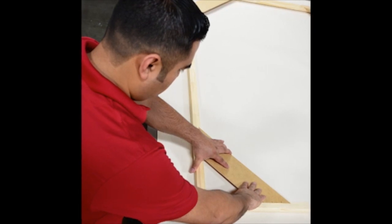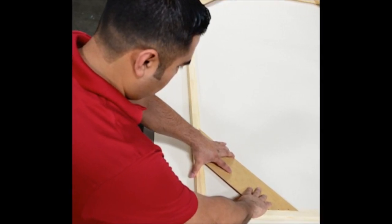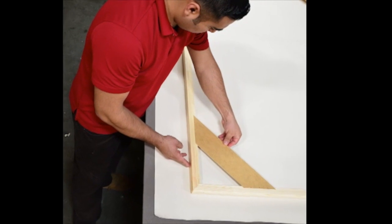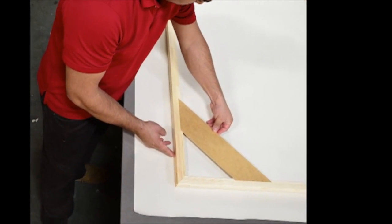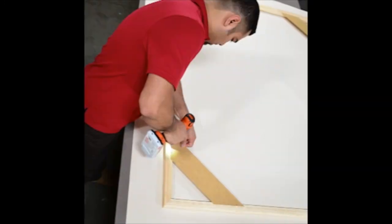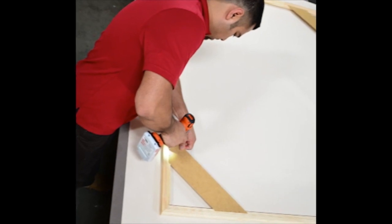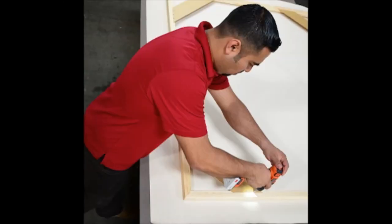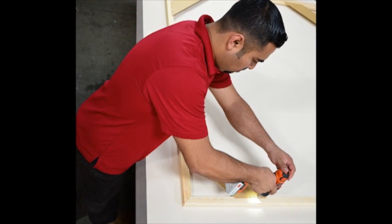The patented corner brace design will help ensure an accurate and easy square-up of your frame. Place the corner brace in the lower groove of the stretcher bar and using the included screws, attach one corner brace to your stretcher bar frame. This will form a perfect 90-degree angle corner.